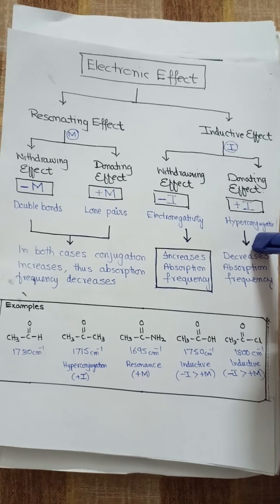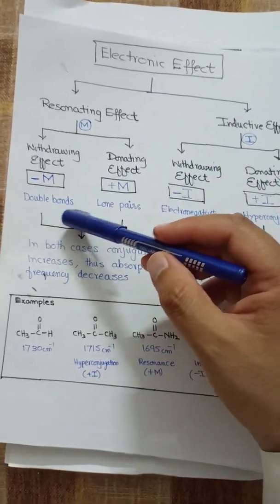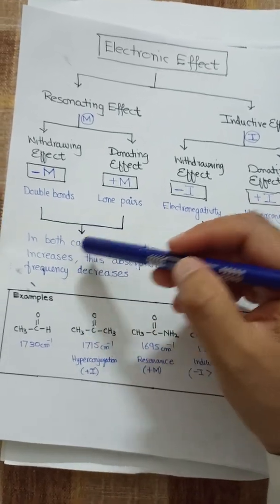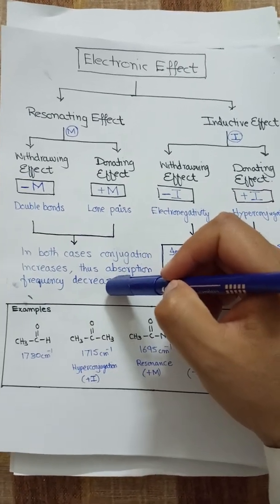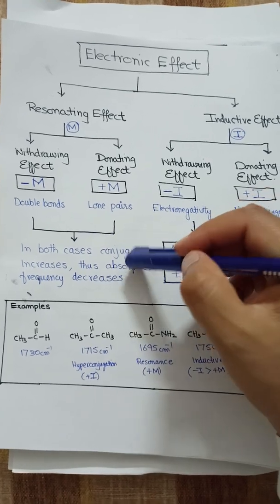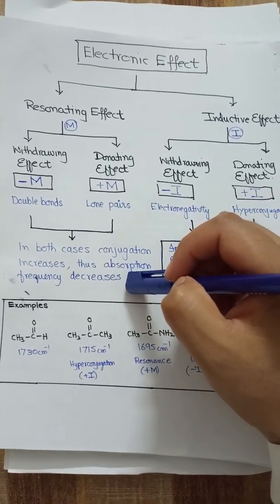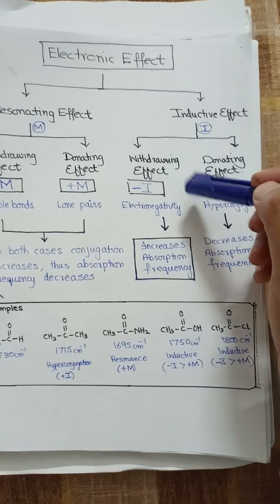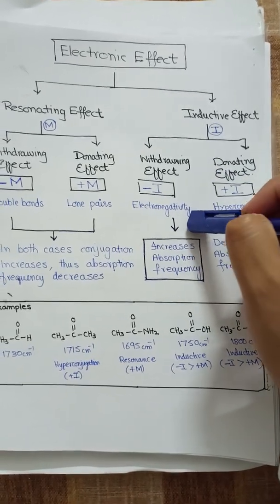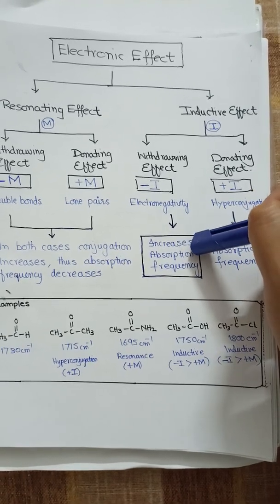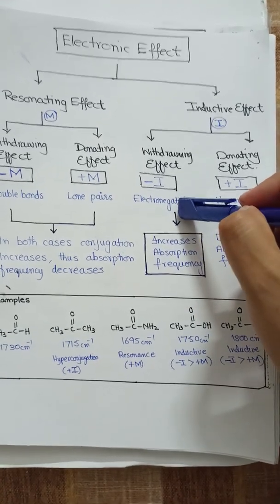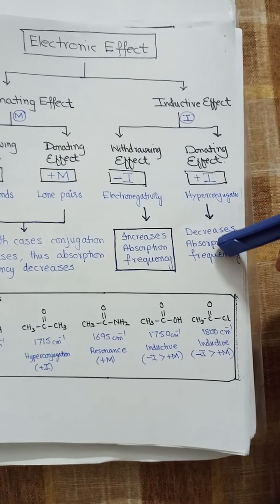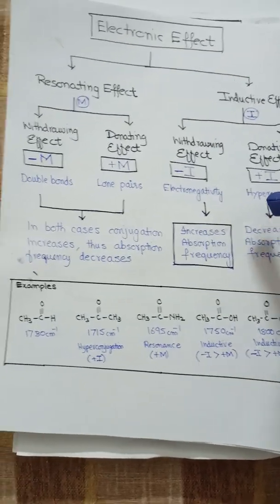The electron withdrawing inductive effect (-I) is due to the electronegativity of atoms, and the electron donating inductive effect (+I) can be through hyperconjugation. In the resonating effect, when resonance or conjugation increases, the absorption frequency decreases. In the case of electron withdrawing inductive effect, it increases the absorption frequency due to electronegativity. The electron donating inductive effect also decreases the absorption frequency due to hyperconjugation.